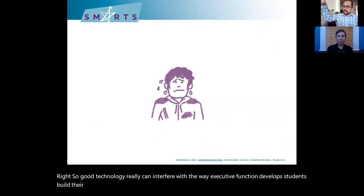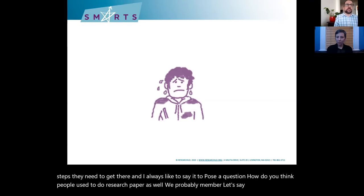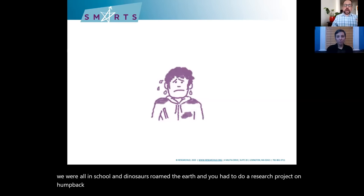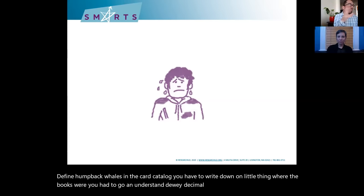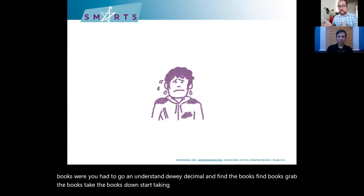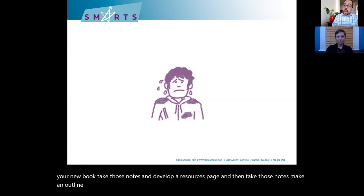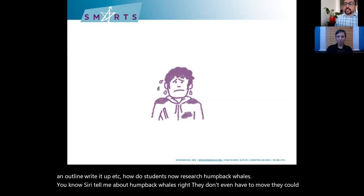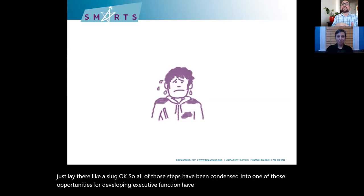Think about how people used to do a research paper on humpback whales. You had to physically get to the library, find the card catalog, locate the books using Dewey Decimal, take notes, evaluate sources, develop a resources page, make an outline, write it up. Now students can just say, 'Siri, tell me about humpback whales.' They don't even have to move. All those steps have been condensed into one — all those opportunities for developing executive function have vanished.